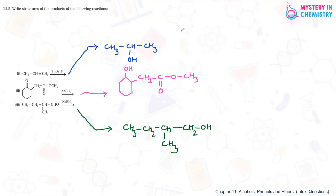Now for the names of all the compounds. The first one is propan-2-ol — the final 'e' of propane is replaced by 'ol', and we write 2-ol because the OH group is present at the second carbon atom.